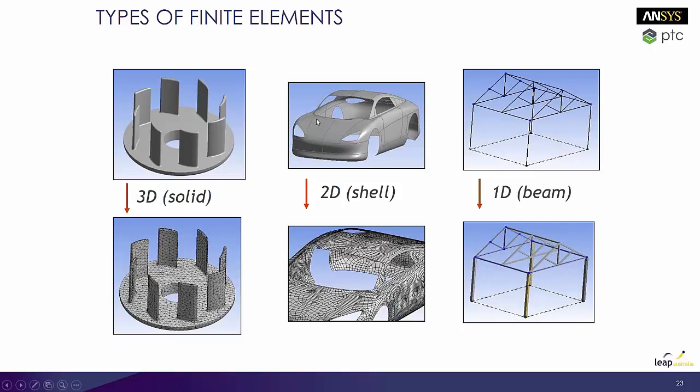We've also got 2D or shell elements. Here we model with bodies which don't have a thickness — they're basically just surfaces. Those surfaces are assigned a property which is the surface thickness or the shell thickness. When this is turned into a finite element mesh, that thickness essentially defines the behaviour, just like when we have a line, that line is assigned a cross section.